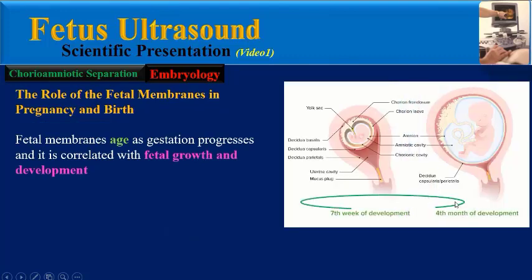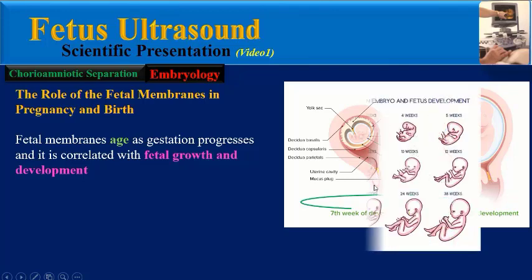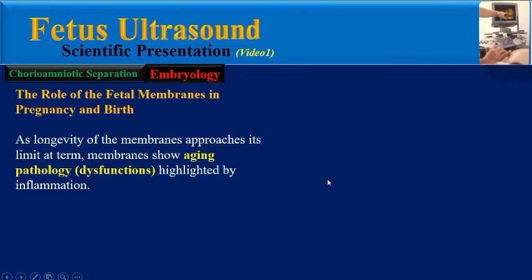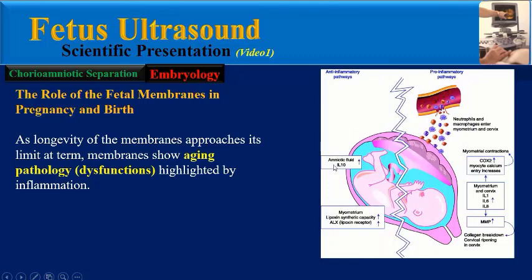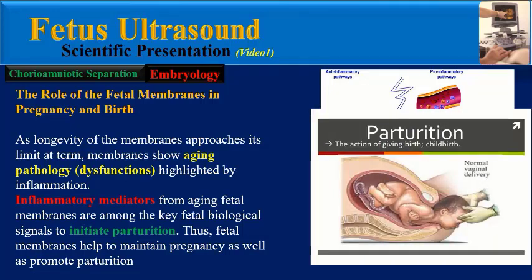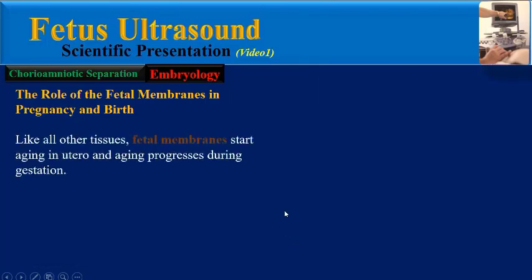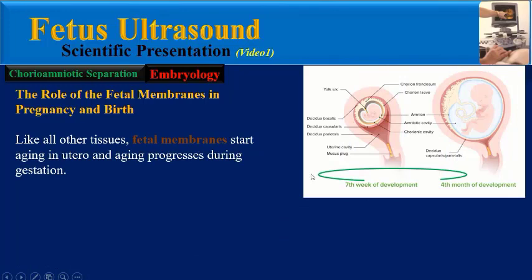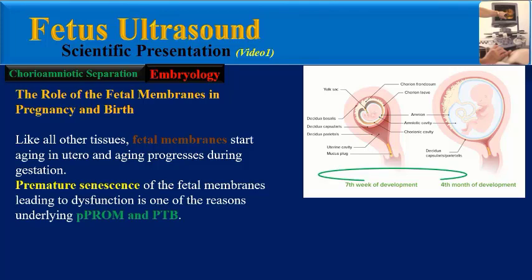All membranes age as gestation progresses, correlated with fetal development and growth. As the longevity of the membranes approaches its limit, term membranes show aging pathology or dysfunction highlighted by inflammation. Inflammatory mediators from aging fetal membranes are among the key fetal biological signals to initiate parturition, as fetal membranes help maintain pregnancy as well as promote parturition.